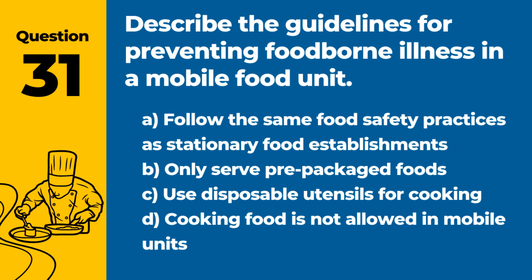Question 31. Describe the guidelines for preventing foodborne illness in a mobile food unit. Answer: A. Follow the same food safety practices as stationary food establishments. Mobile units must adhere to food safety standards to protect public health.